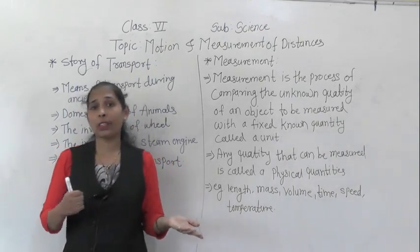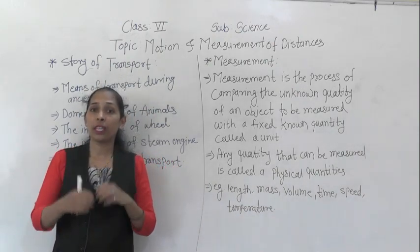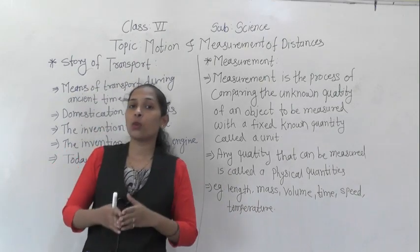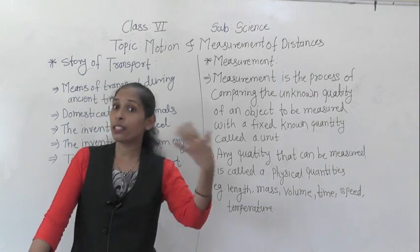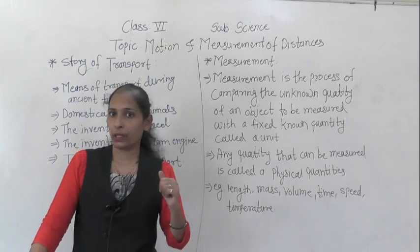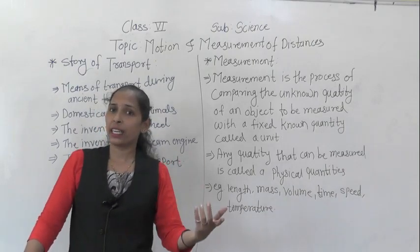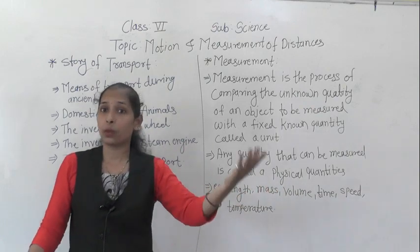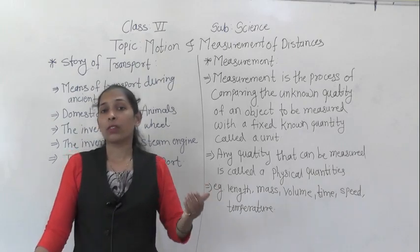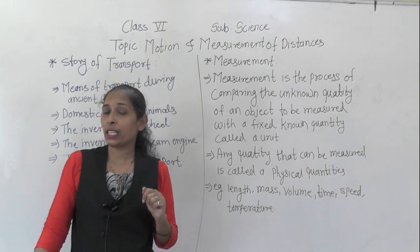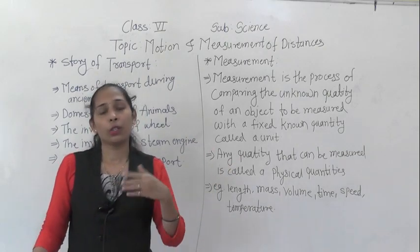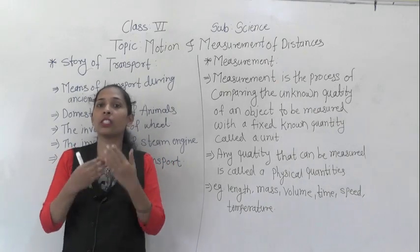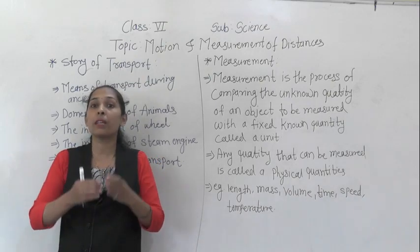The different means of transport also depend on the distance — how much distance we have to cover. If the distance is very far, like going to another country, we choose an aeroplane. For a different state, we can go by plane or train. If the distance is nearby, we can use a car or bus. And if it's very close, like going to a nearby shop, we can simply go by walking.